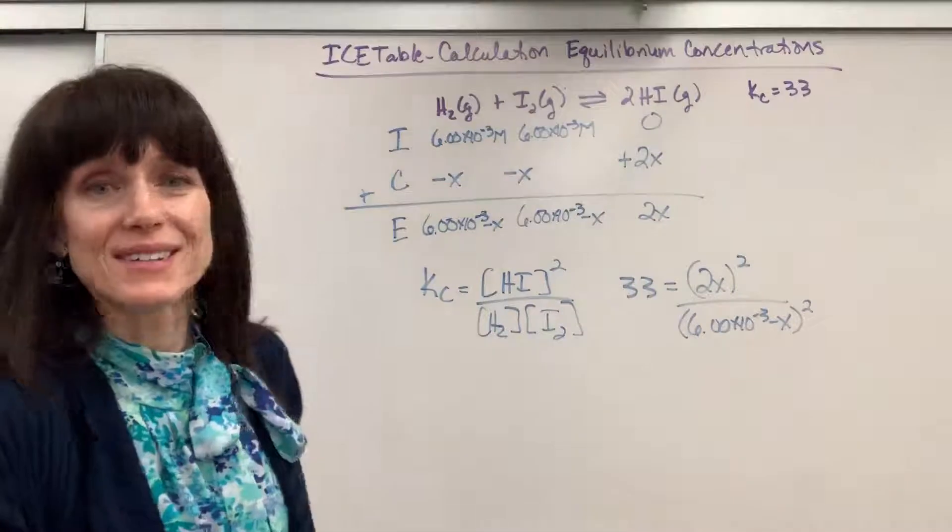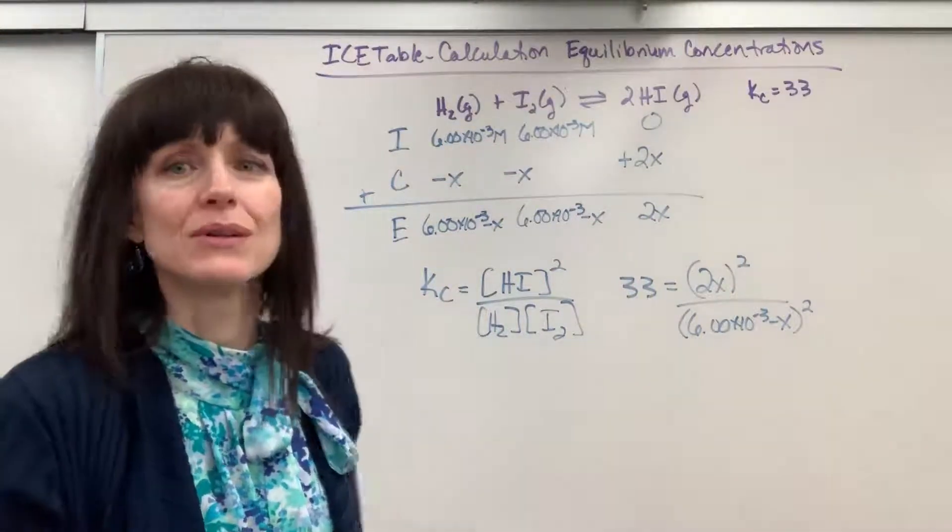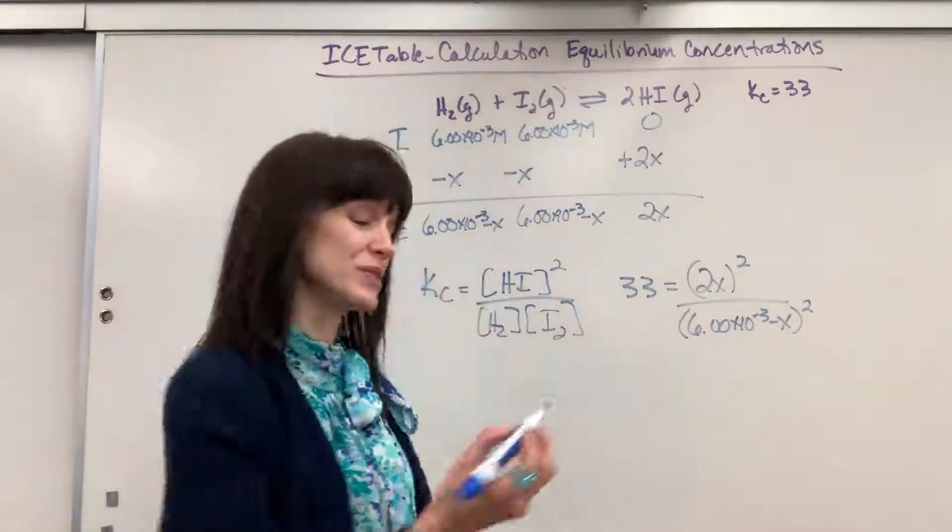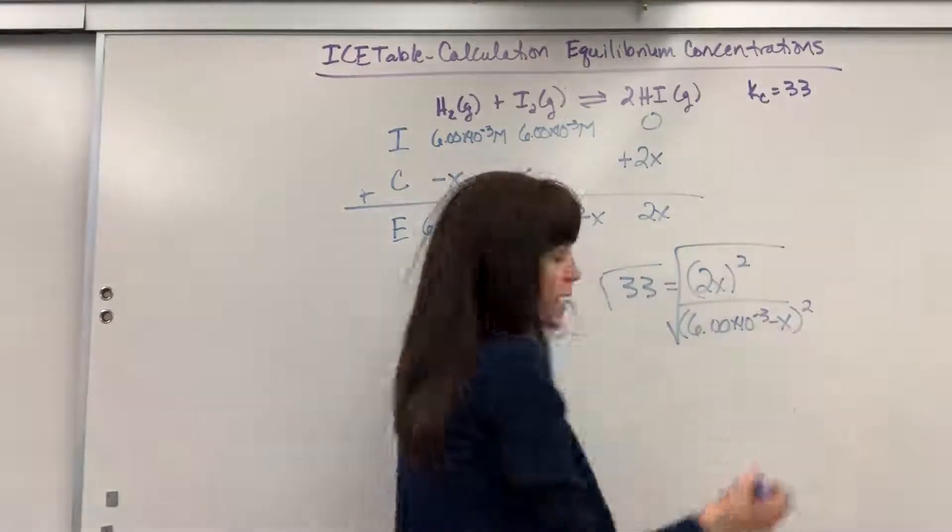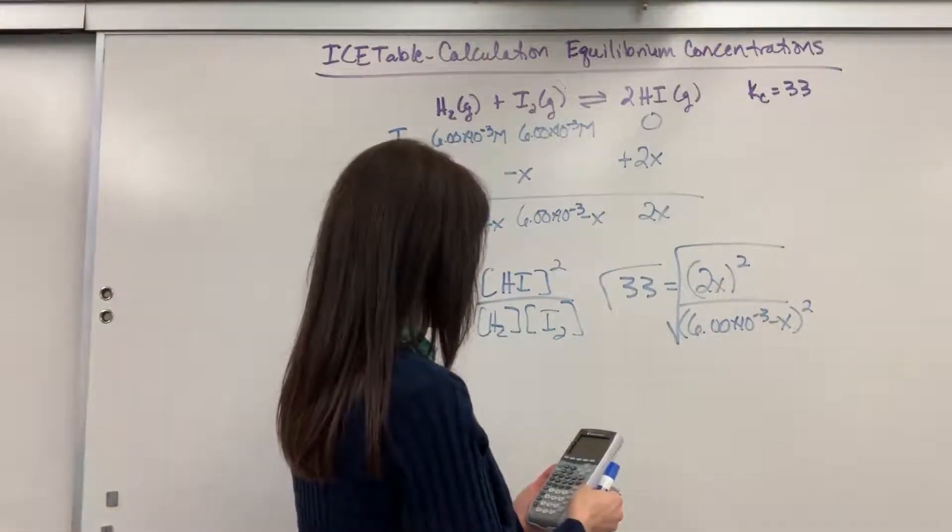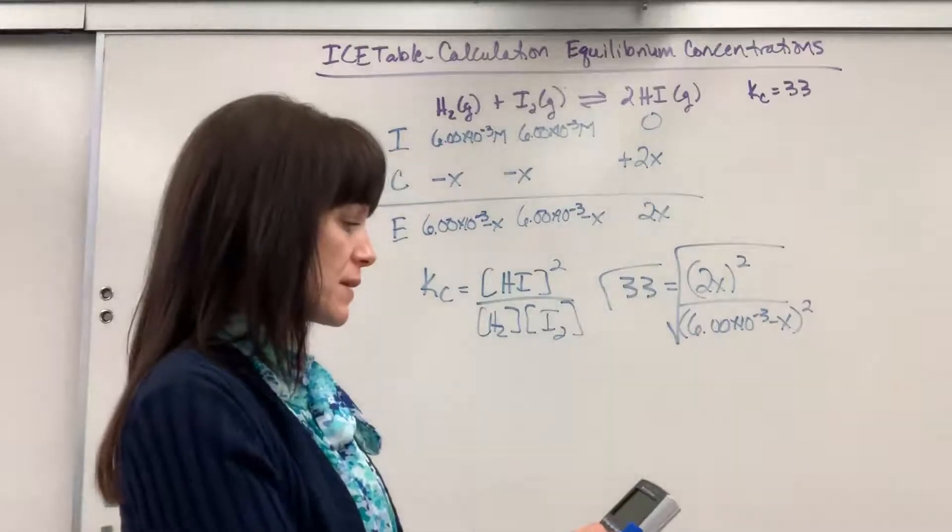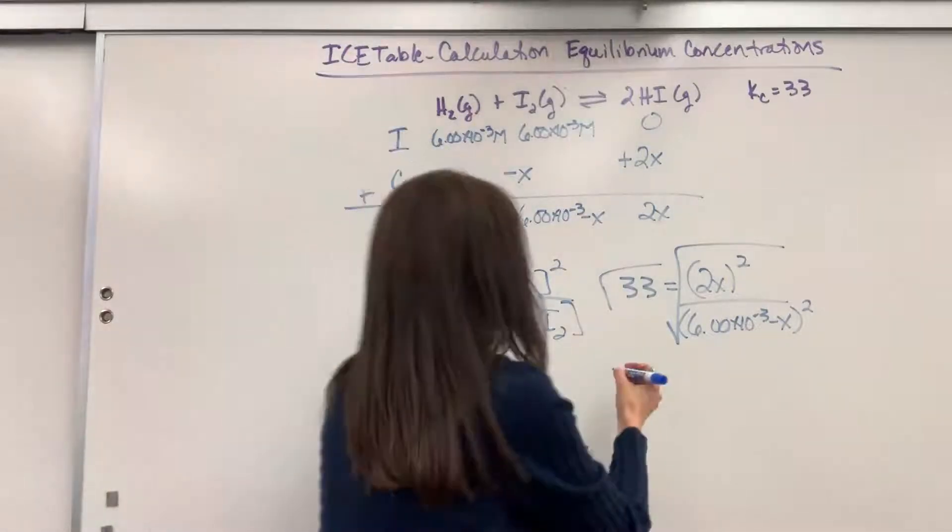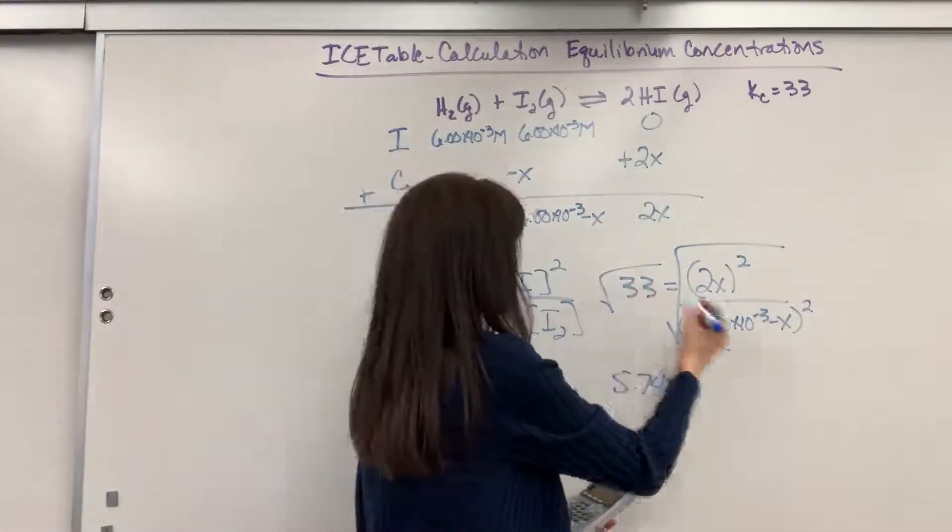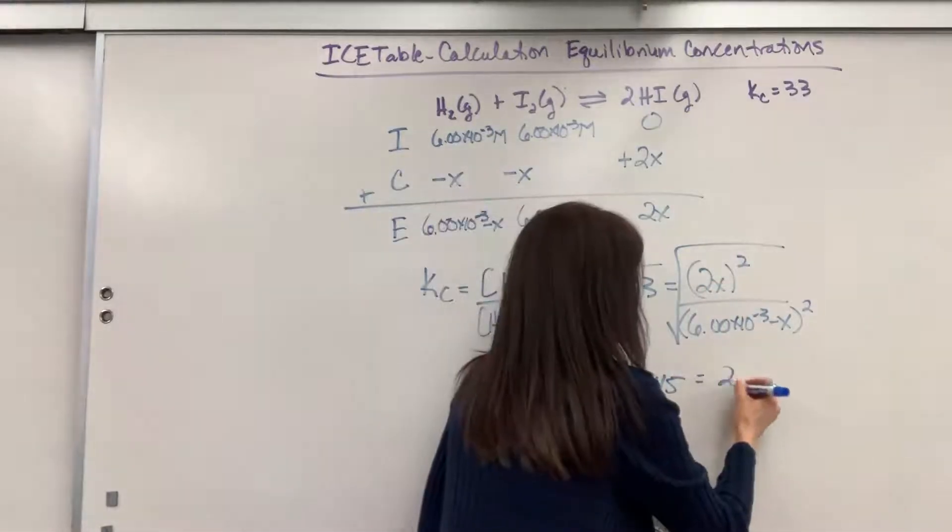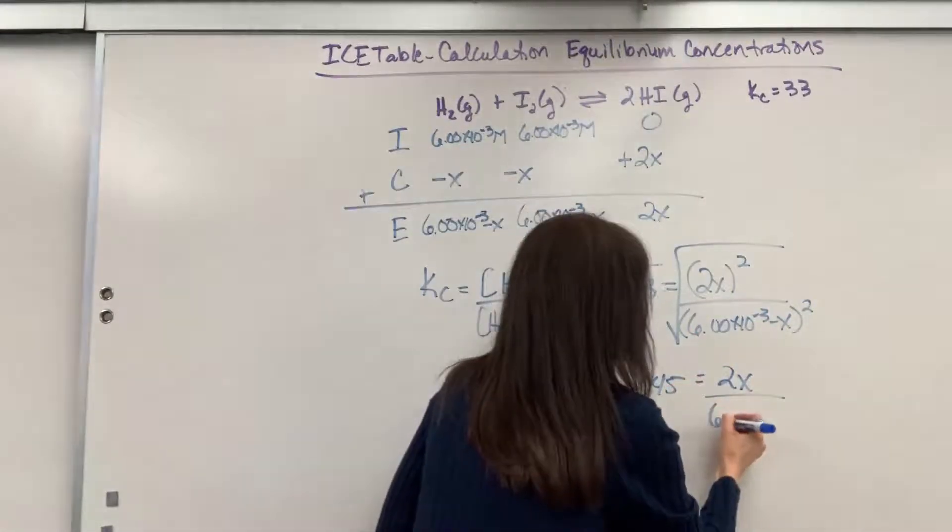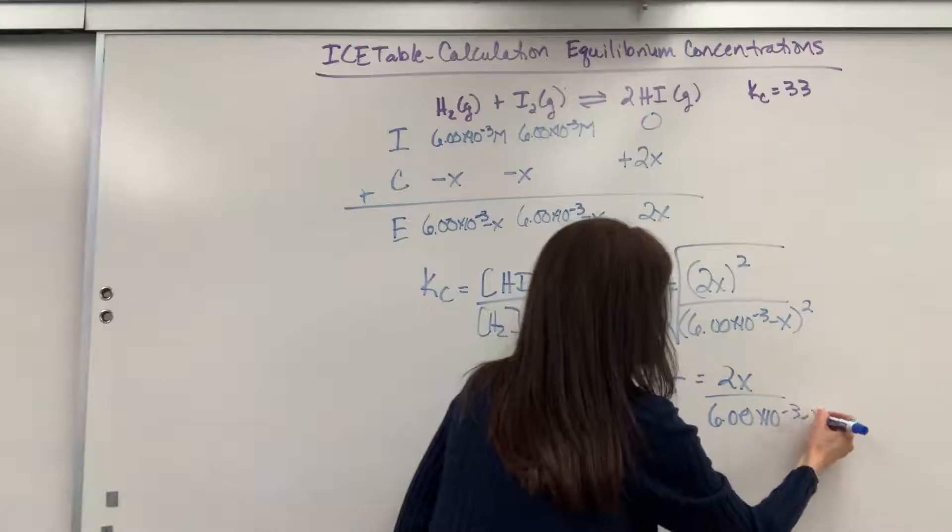Now here's a little algebra trick that will save us a lot of work so we don't have to do the quadratic equation. Because this is squared and this is squared, let's just take the square root of both sides. So I'm going to square root both sides. And the square root of 33 is 5.745. Okay, that's the square root of 33. Equals 2X divided by 6.0 times 10 to the minus 3 minus X squared is just the 6.0 times 10 to the minus 3 minus X. Okay,